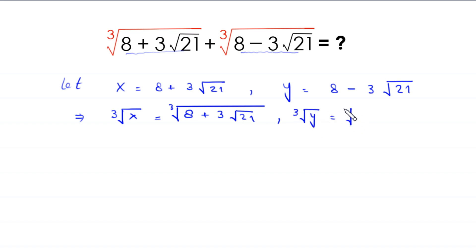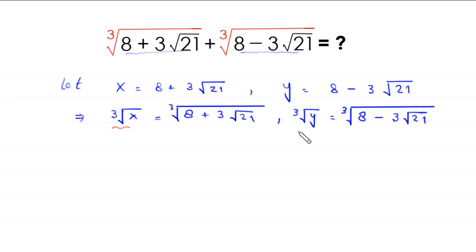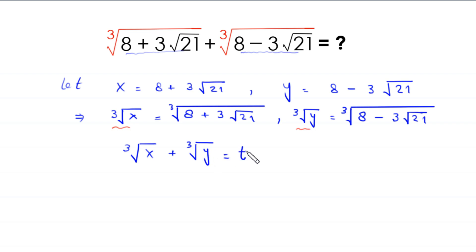And cube root of y equals cube root of (8 minus 3 times root 21). We suppose that the sum of these two terms, cube root of x plus cube root of y, is equal to t. So now we have to find the value of t. We take a cube of both sides of this equation.